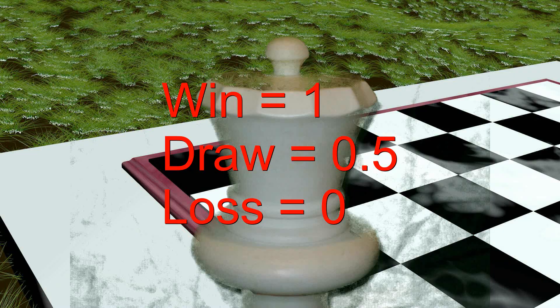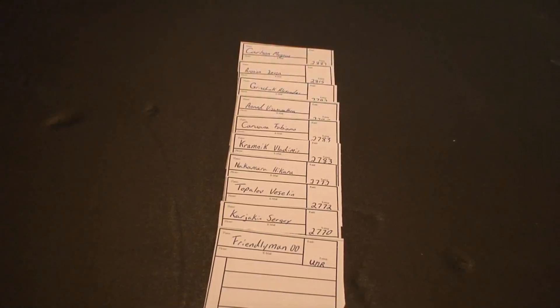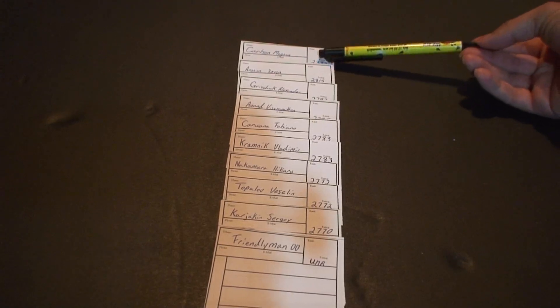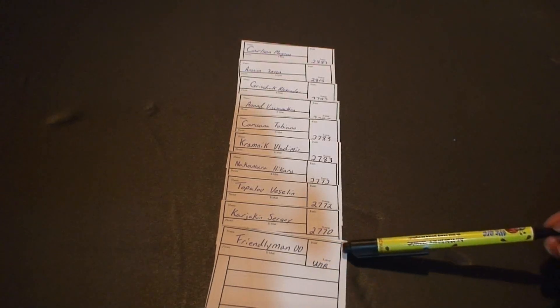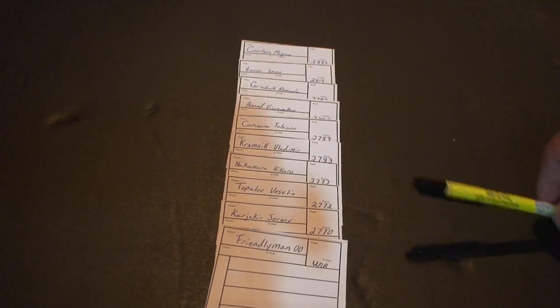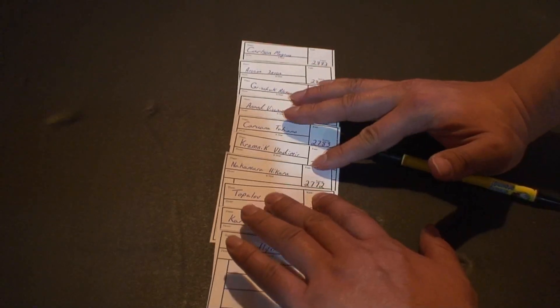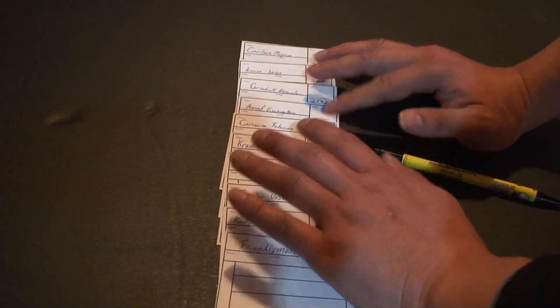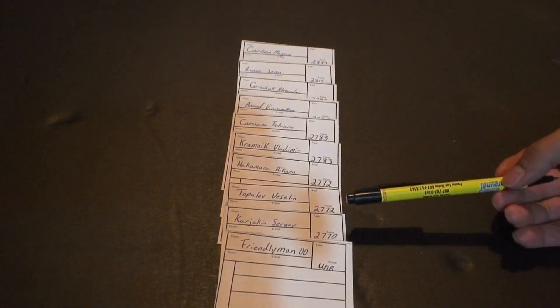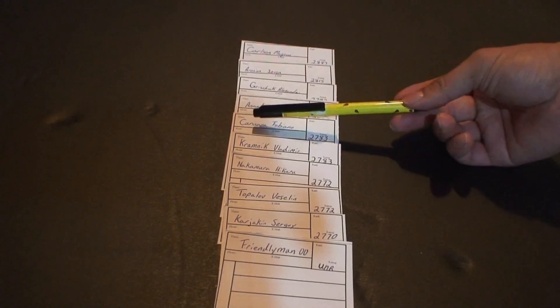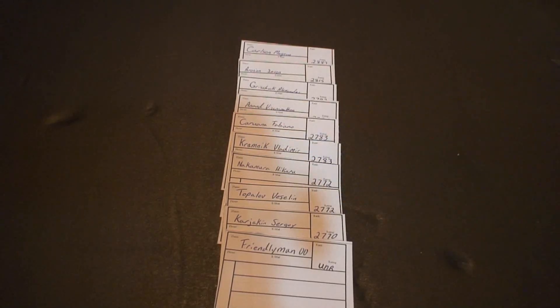One point is a win, a draw is half a point, and a loss is nothing. What you'll notice is the highest rated player is always first and the lowest rated player is at the bottom. In case of doubles — tied ratings — you do it alphabetically. So if one is a C and another is a K, that's how you figure out the order.